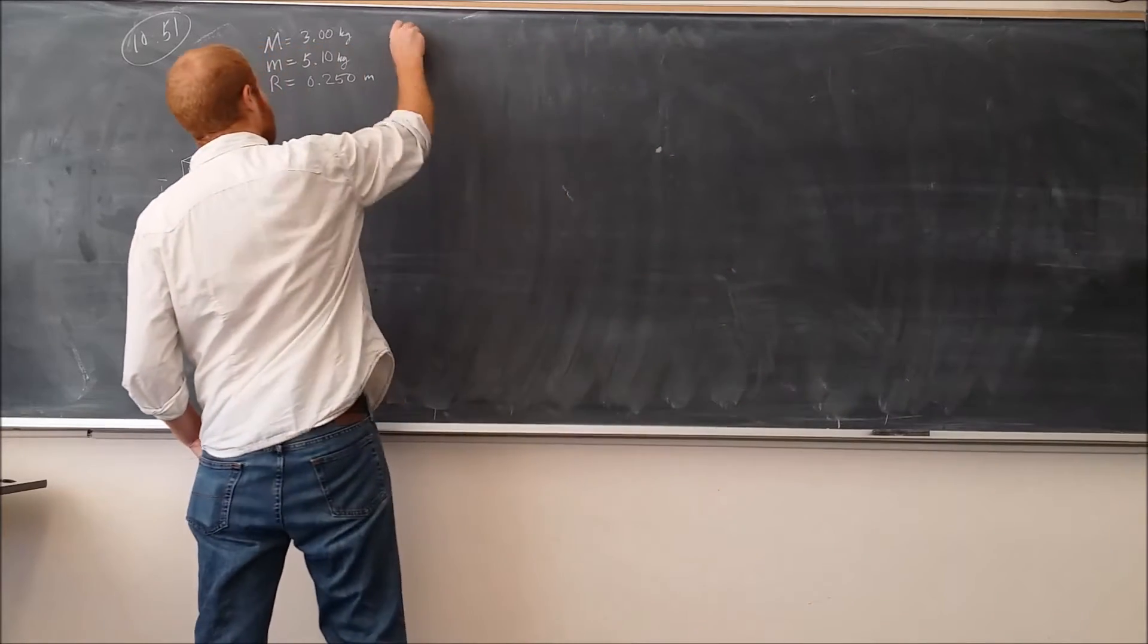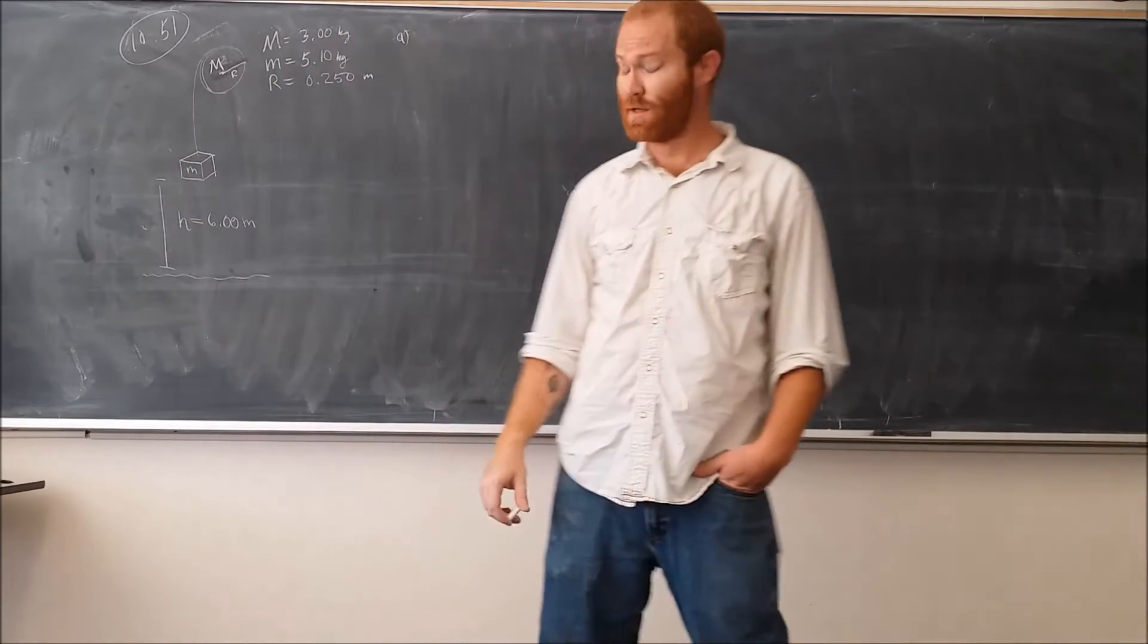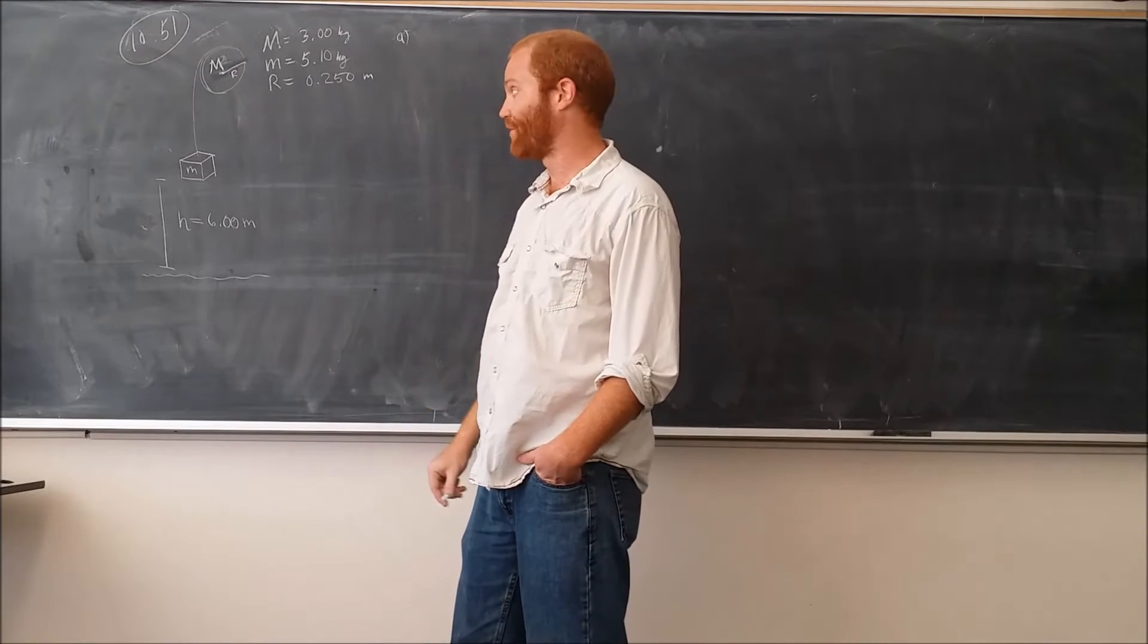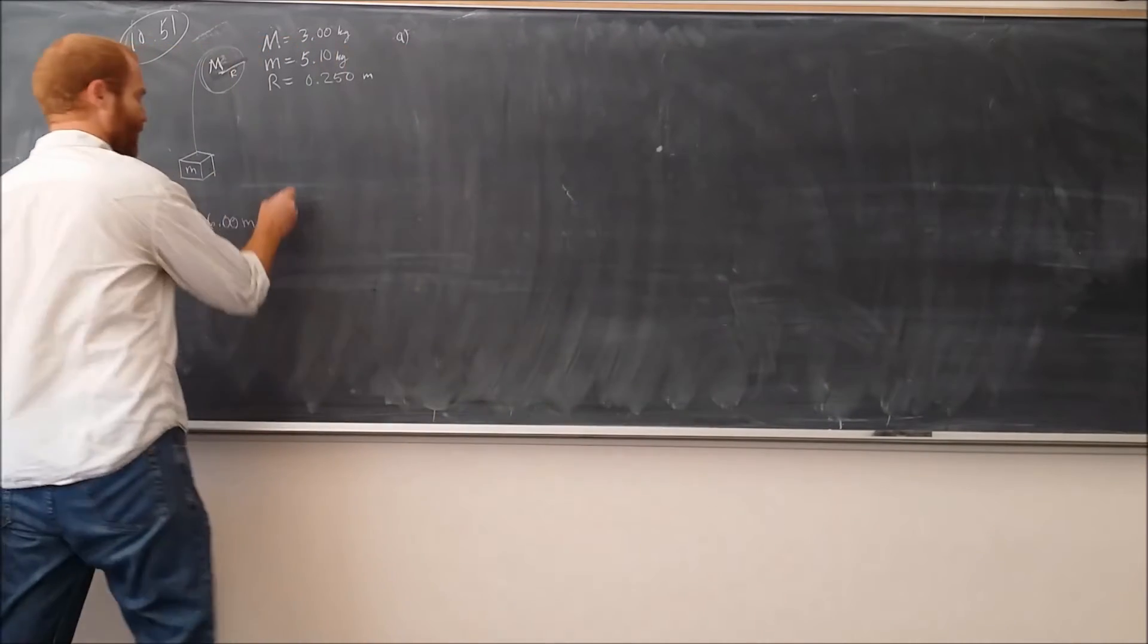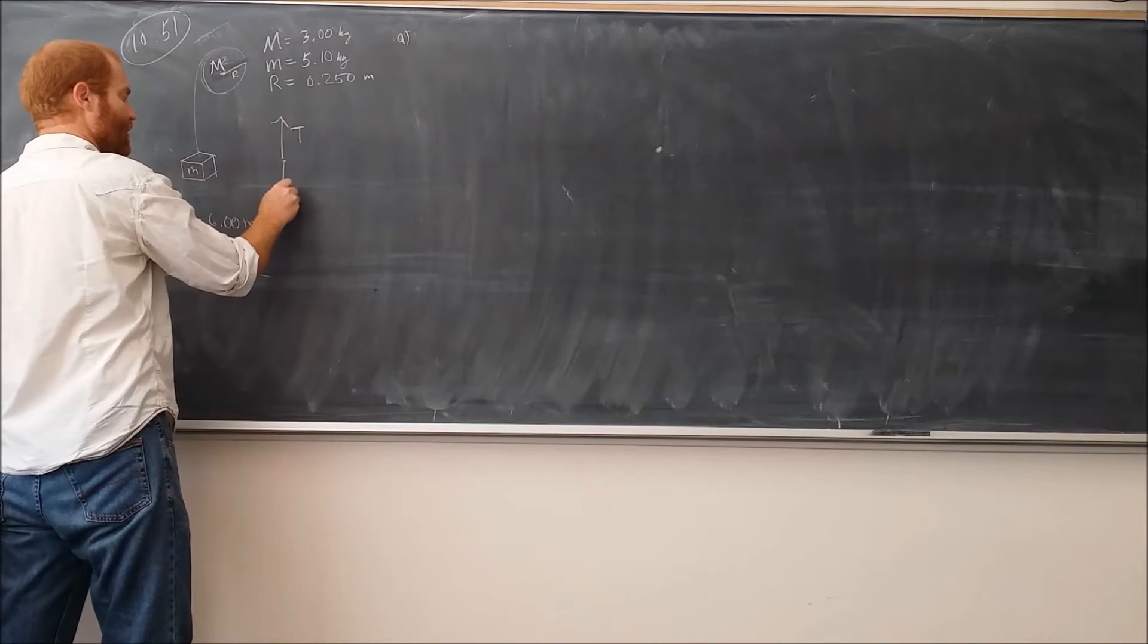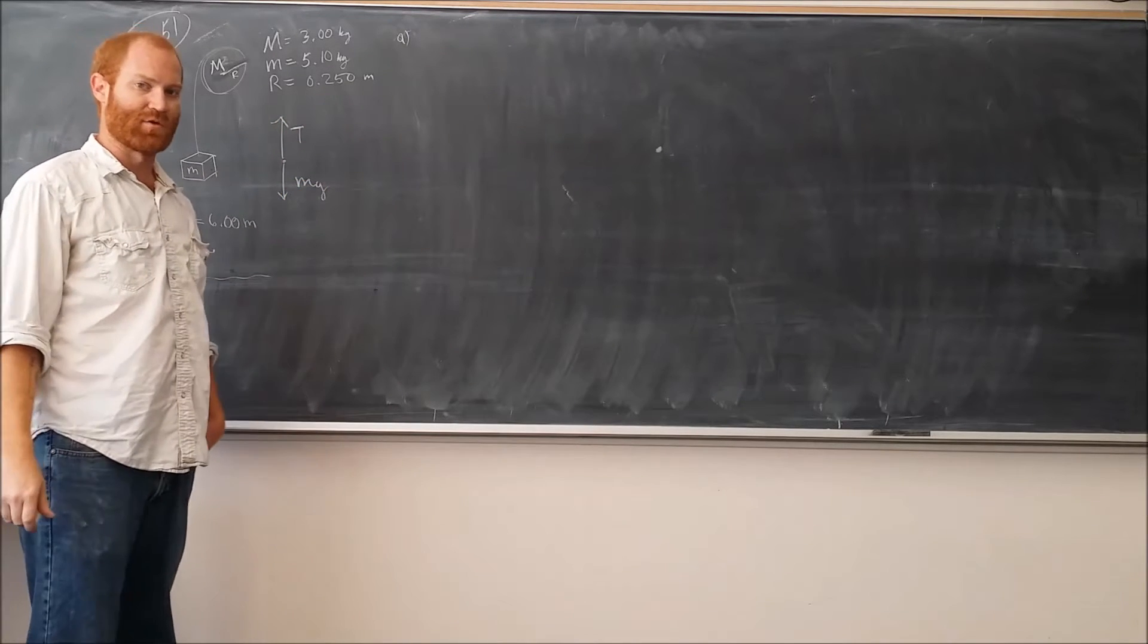So for part A, the first thing that we need to do is to look at this problem and identify the forces that we have on this by drawing a free body diagram. So with a little mass m right here, we're going to have two forces. There's going to be a tension that points in this direction. There's going to be a weight that points in that direction.